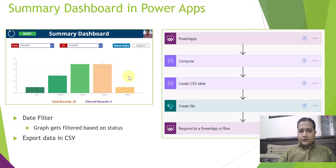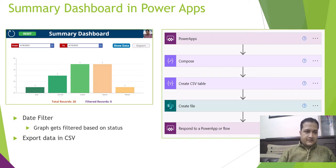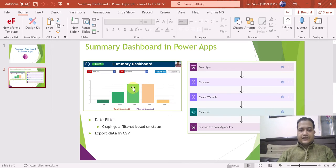The data source I am using is a SharePoint list. For exporting the data I will be showcasing a Power Automate flow I created, which takes input from PowerApps, creates the CSV table, creates the file in a SharePoint library, and finally sends the file URL back to PowerApps — so that when the user clicks the export button, the file will be downloaded locally on their system. Let's see this in action in PowerApps.